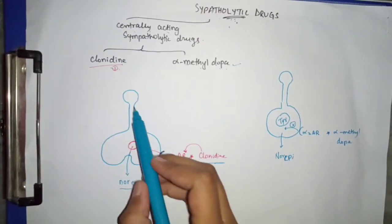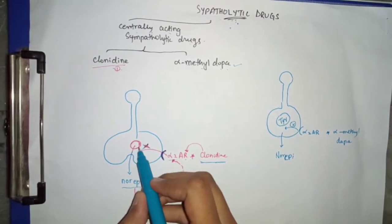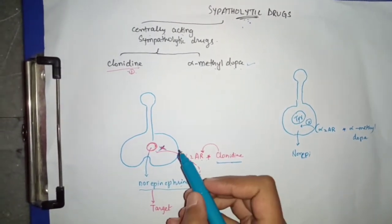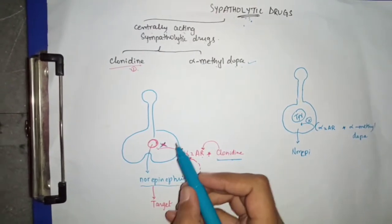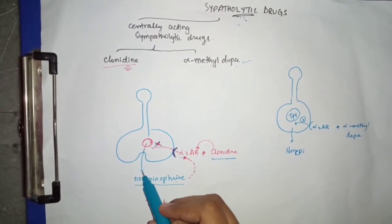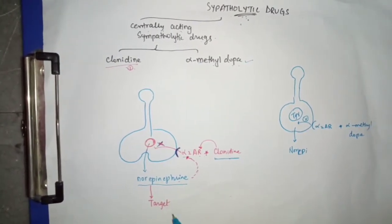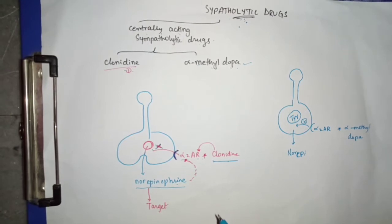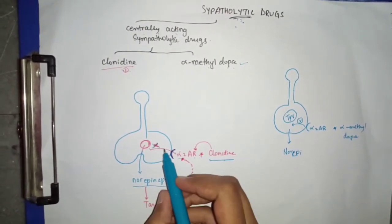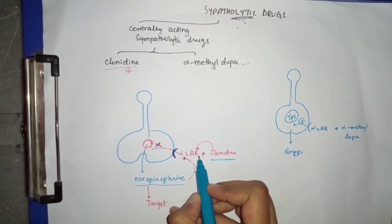Consider a nerve ending — nerve endings have vesicles which concentrate norepinephrine. They produce norepinephrine from tyrosine by a series of steps, then release norepinephrine from the nerve endings. This norepinephrine acts on its target to bring about the desired sympathetic response. Normally, nerve endings also have a receptor called the alpha-2 adrenergic receptor.